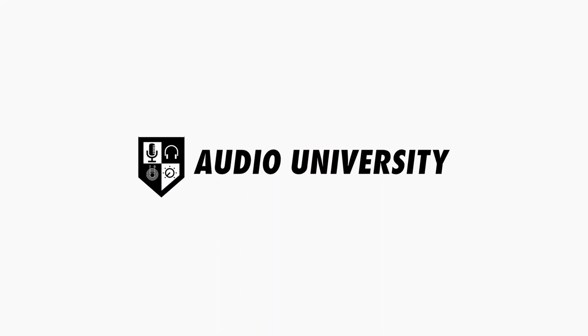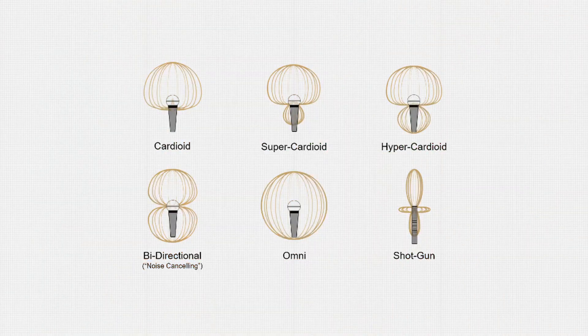The first thing I want to address is the problem of room noise and leakage from other instruments finding their way into the microphone. One feature of a microphone that we can use to our advantage is its polar pattern, which determines how a microphone responds to sounds based on the direction they're coming from.